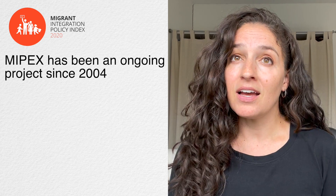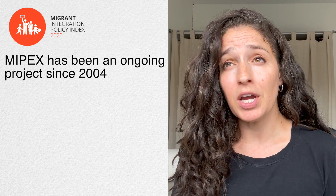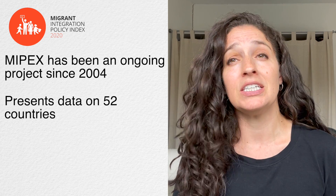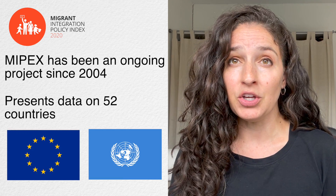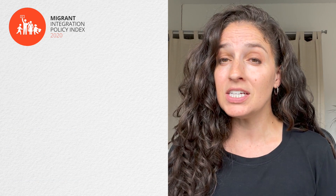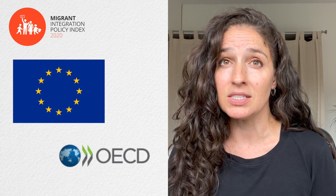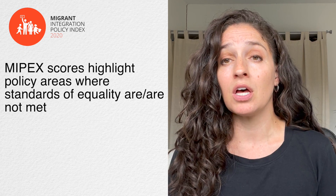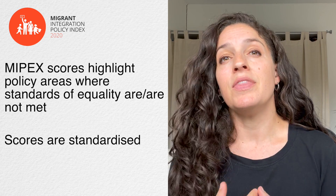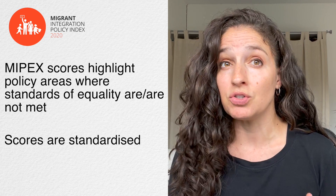So just a quick recap. MIPEX has been an ongoing project since 2004 and currently presents data on the extent to which national migrant integration policies in 52 countries uphold the EU and UN's principles of equality. The 52 countries covered are all EU countries as well as all OECD member states. MIPEX scores highlight policy areas where standards of equality are either met or not met, and they're standardized so you can make comparisons between different countries. In this video we'll demonstrate how MIPEX scores can be used in academic research to determine links between integration policies and migrant integration outcomes, discussing key findings from previous research and avenues for future research.